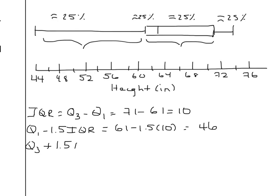The other side of the outlier is 1.5 plus the IQR. We got 71 plus 1.5 times 10. We should get 86.